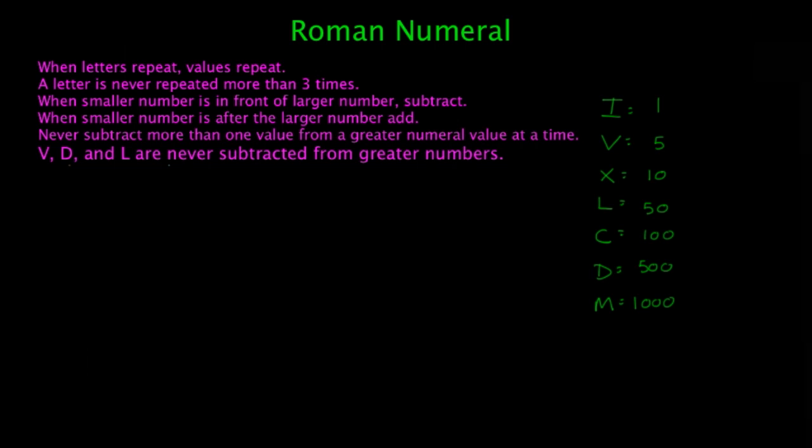But these are just the rules that you should follow when you're figuring out Roman numerals. So the first one, it's going to be when a letter repeats, the value repeats. So for example, if you have I, I, I, that's going to equal 3.